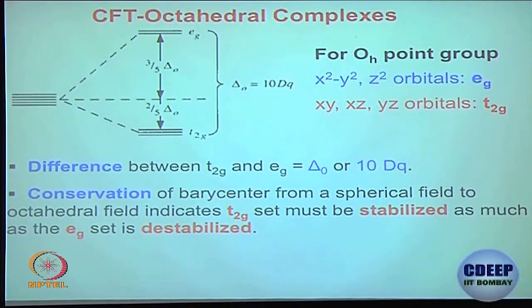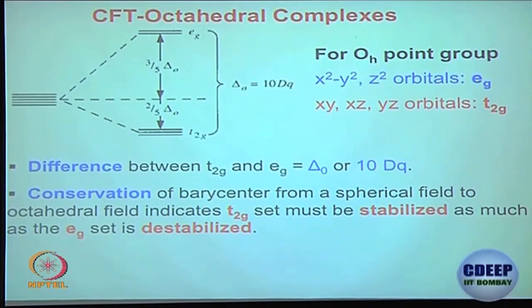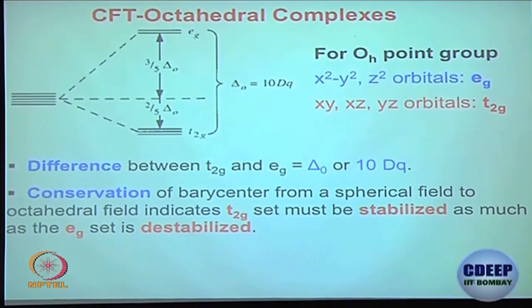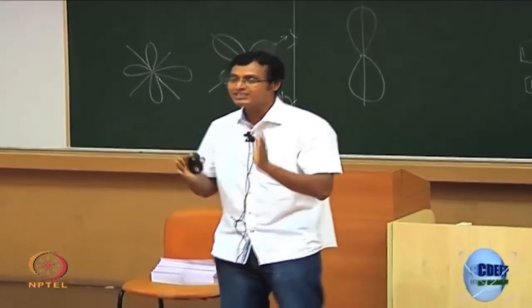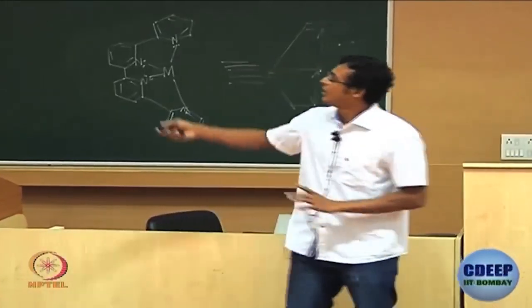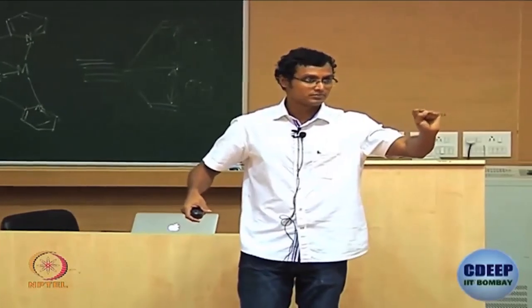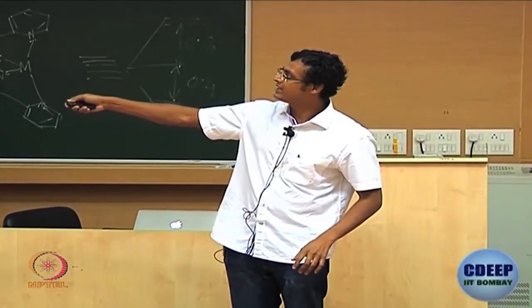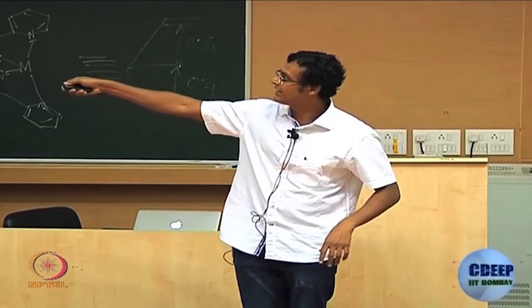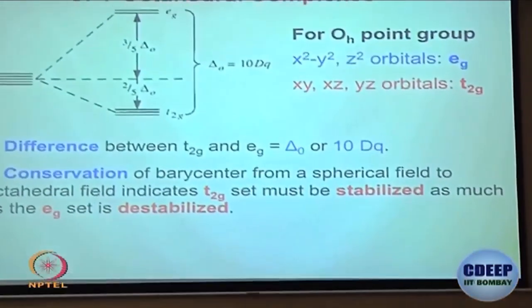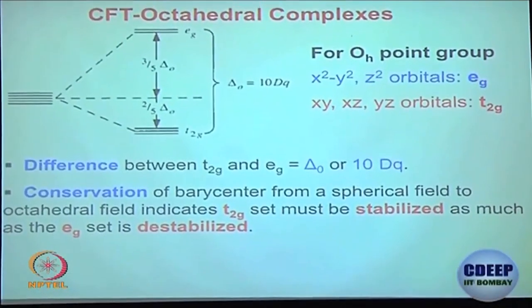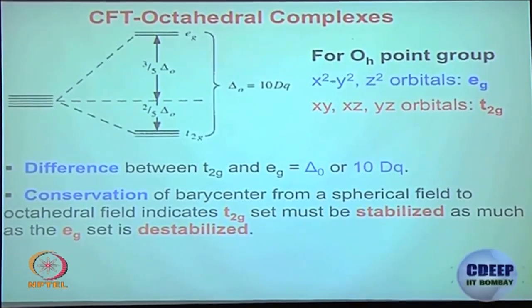The filling of electrons must now be described in terms of T2g and Eg occupancy, not just d-electron count. For example: T2g⁵ Eg⁰, T2g³ Eg², T2g⁴ Eg², or T2g⁶ — these are the kinds of configurations we will discuss. What order the d orbitals are filled depends on the ligand.